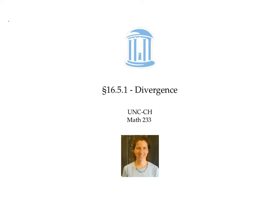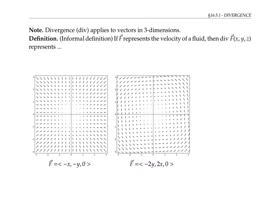This video defines divergence of a vector field in three dimensions. Informally, if the vector field F represents the velocity of a fluid, then the divergence of F at the point x, y, z represents the net flow from the point x, y, z.